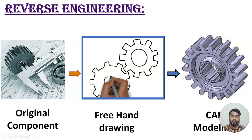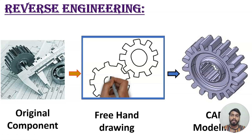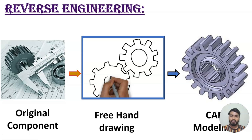Using that rough 2D sketch with dimensions, we create a 3D model in CAD software. Then again we convert that 3D model into a 2D drawing, and that 2D drawing is given to the supplier or for the production process. That is how we do reverse engineering — starting from a physical component, measuring it, designing the 3D model, converting to 2D, and sending for production.